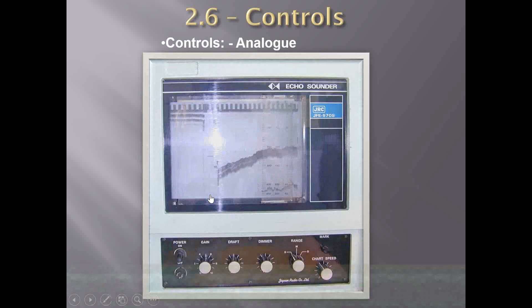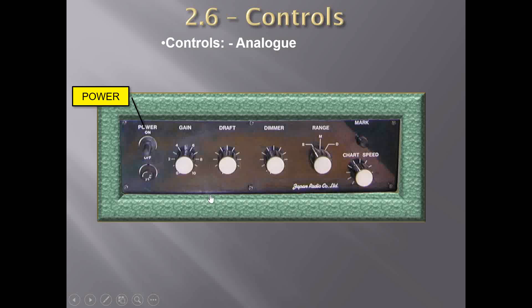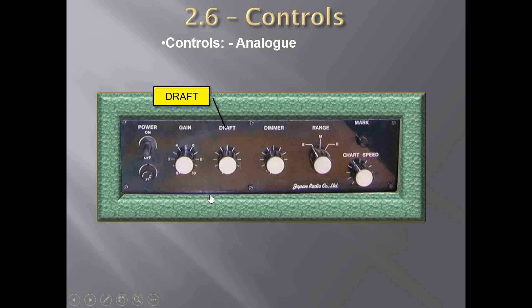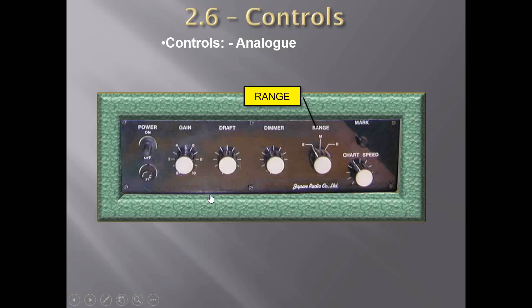Let me show you what these controls look like on the echo sounder. You can see the power switch, which is used to switch the echo sounder on and off. This is the gain switch we were talking about, which amplifies the receiver signal. This is the draft switch — if you use the draft switch, the display of depth will include the ship's draft as well. Normally this setting is kept at zero by most ship's masters, as mariners are interested only in the under-keel clearance. Then there is the dimmer switch, which is a lighting switch used at night to provide light to the display.